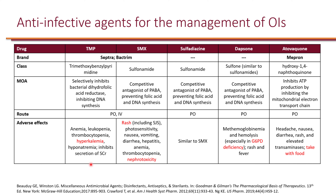Regarding adverse effects: trimethoprim is available as a standalone drug but more commonly used in combination. The trimethoprim component can lead to anemia, leukopenia, thrombocytopenia, as well as hyperkalemia and hyponatremia. Trimethoprim can also inhibit the secretion of serum creatinine, artificially increasing serum creatinine levels without affecting GFR. The most important monitoring concern for trimethoprim is hyperkalemia.